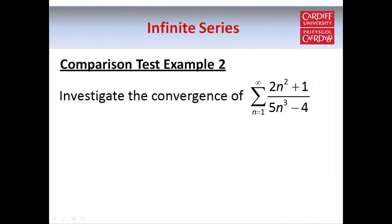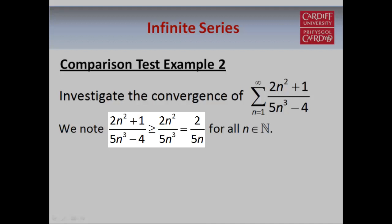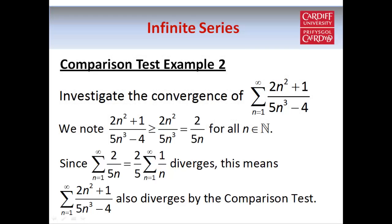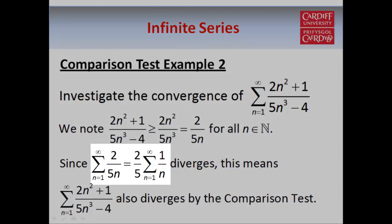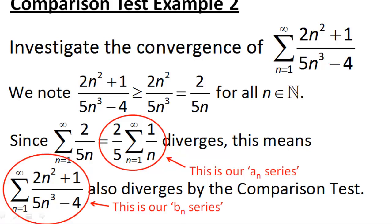Here's another example which is similar, except this time we'll show that this series is divergent. In this case 2n²+1 is larger than 2n², and 5n³-4 is smaller than 5n³. So (2n²+1)/(5n³-4) must be larger than 2n²/5n³, which is the same as 2/(5n). The series 2/(5n) is the same as 2/5 times the series of 1/n from n=1 to infinity. We've taken 2/(5n) as our a_n series, and we know this series is divergent because the harmonic series 1/n is divergent. So therefore our b_n series, which is our original series (2n²+1)/(5n³-4), must also be divergent by the comparison test.